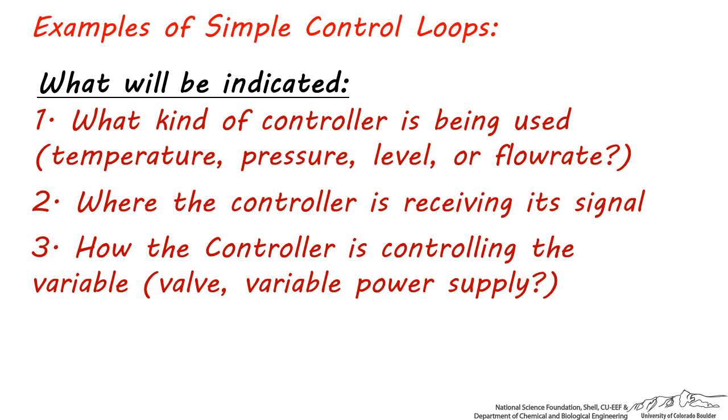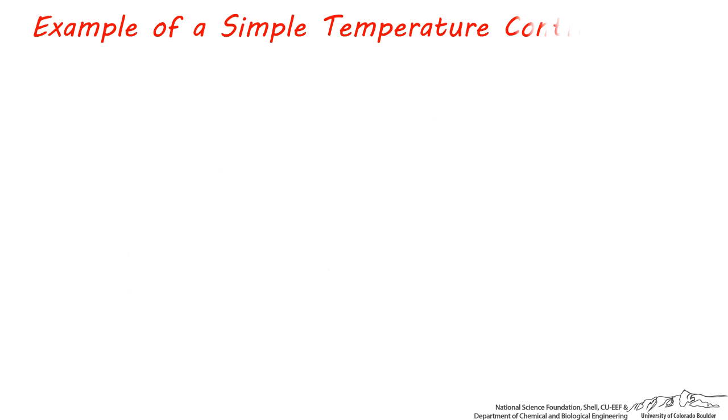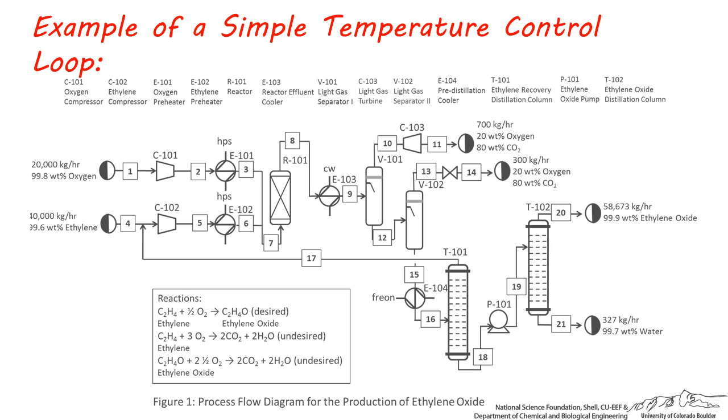Let's look at at least one example of each of the four types of simple control loops so you can see how these are visually depicted and where you would most likely place them in a process flow diagram. Let's first look at a simple temperature control loop for a distillation column. Temperature is a critical variable to control to avoid explosions, runaway reactions, and unwanted reactions.